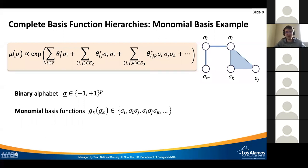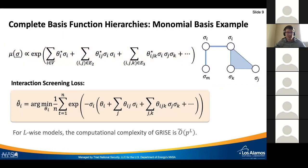We can start with the first and second orders, which corresponds to the famous Ising model, and then we can add three-body interactions, four-body interactions, and so on, up to a certain order when we are happy with our choice. The interaction screening loss for this case would take the following form.